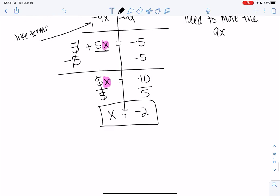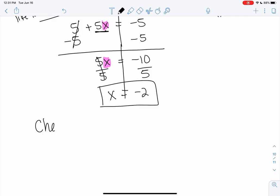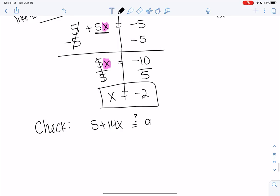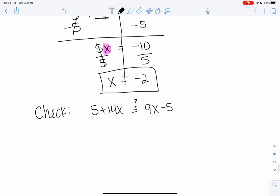And if we're not sure, let's go ahead and check. So this one's a little bit more work to check because we have two X's. So we want to make sure 5 plus 14X is equal to 9X minus 5. If we do not get the same number on both sides, we messed up. We don't care what that number is, we just want it to be the same. So on the left side, we'll plug in negative 2.